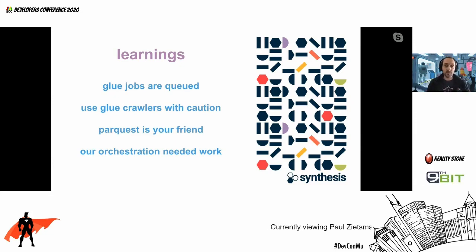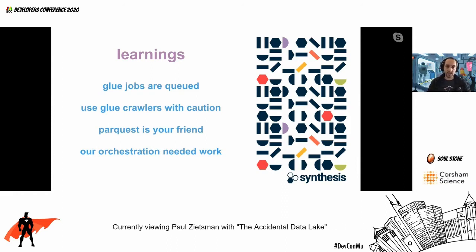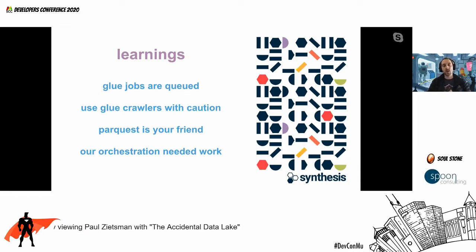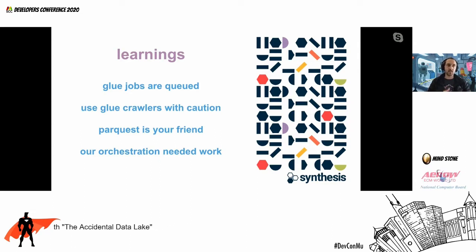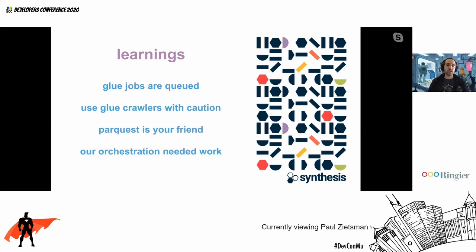We used Parquet as our output format. It's quite a hard format to work with in general — if you have a Parquet file and you want to read it, it's not like opening a JSON file and reading it. But there are so many benefits with using it. It plays well with a lot of tools in the big data space. It's a bit of a standard, which is good. And the way we stored our files in Parquet also meant that we could compress them, which made our queries a lot faster because there's just less content to pull up from S3.